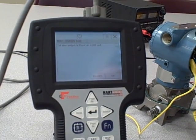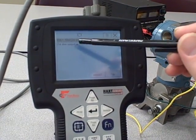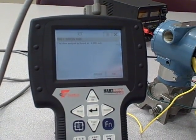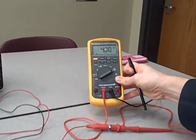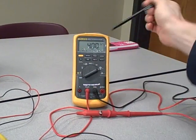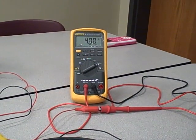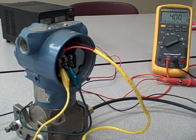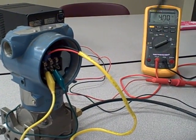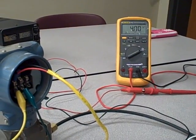For example, I'll tell it to go to 4 milliamps. It says here, field device output is fixed at 4 milliamps. If we look at our loop current meter, we see that the current is now fixed at 4 milliamps. This is despite the fact we still have about 500 inches of water column pressure applied to the transmitter. It is now ignoring that applied pressure and fixing the output at 4 milliamps.